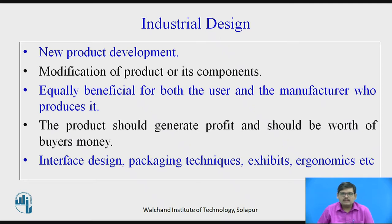Industrial design not only encompasses the features of the product — how it looks, what features and facilities are there, what materials and stresses and forces are considered — but also the user interface. Then, packaging: once the product is manufactured, how it needs to be packed effectively and cost-effectively. The product should also be ergonomically suitable for manufacturing, for the user, and for design. So not only the physical features, but all allied areas like packaging, economics, manufacturing, and R&D should be considered by an industrial designer.